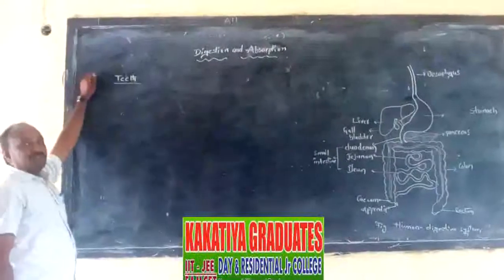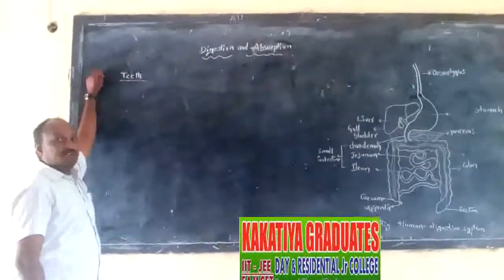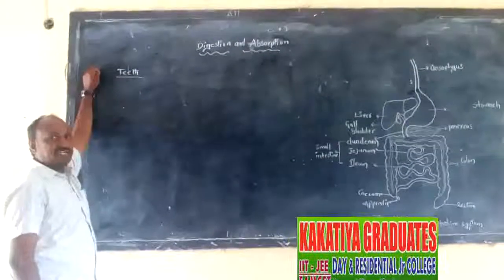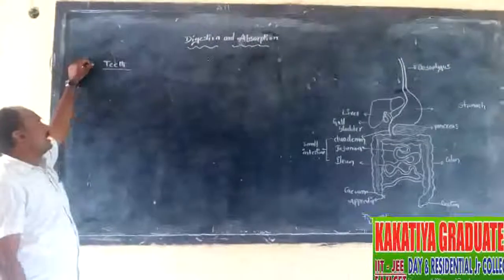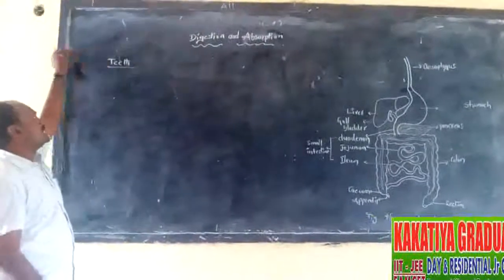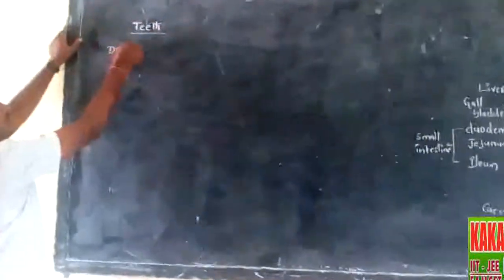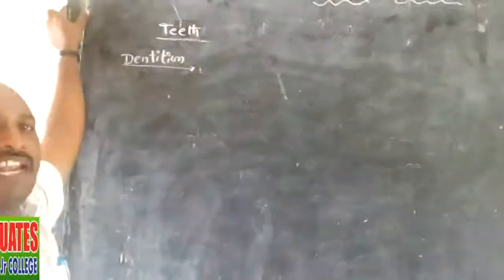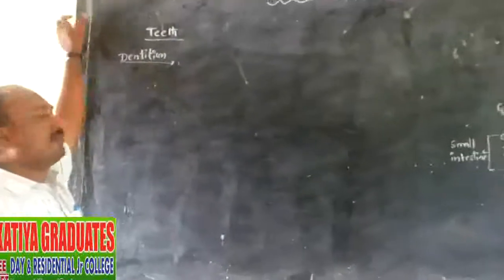The teeth will be categorized into three parts: the crown, the neck, and the basal part called the root. Here the arrangement of the teeth on the jaw bones is called the dentition.